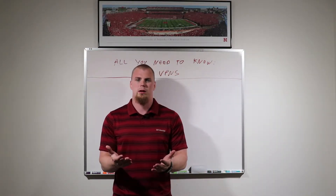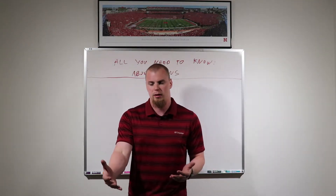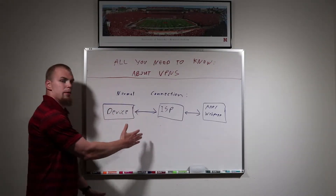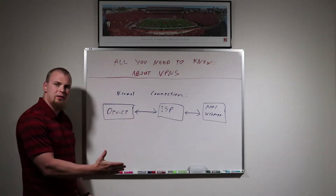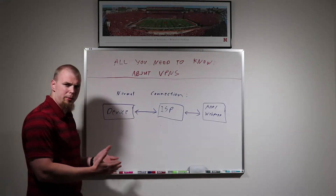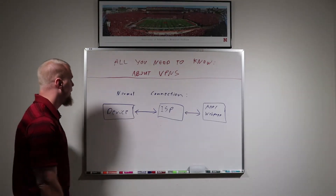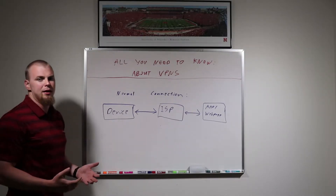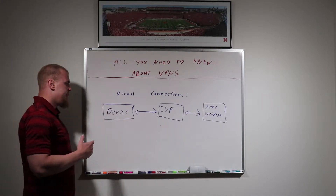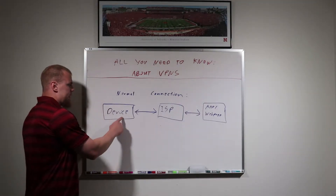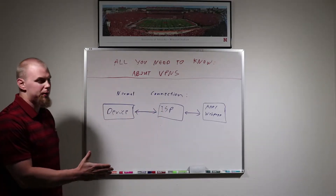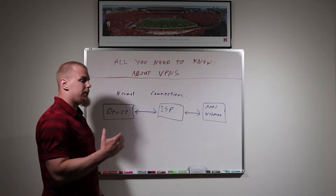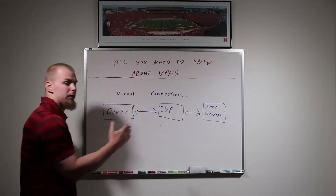First I'm going to show you what a normal connection looks like, and then we'll move on to a VPN connection. Here is a very basic example of a normal internet connection without a VPN. You have your device — it can be an iPhone, iPad, computer, Mac, any type of device. When you connect to the internet you connect out to your ISP, your internet service provider, and they connect to whatever web page or app you're going to on your behalf.